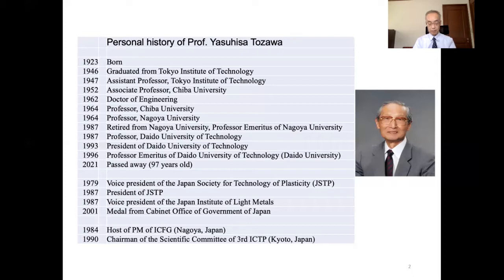Professor Tozawa has held numerous positions, such as the president of the JSTP, the vice president of the JIRM, the Japanese committee member of CIRP and ICFG. In 2001, for these achievements, he was awarded a medal from cabinet office of government of Japan.